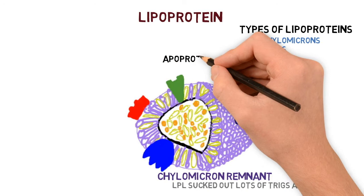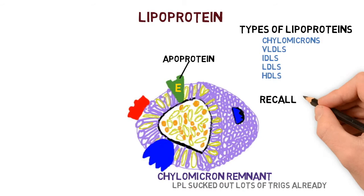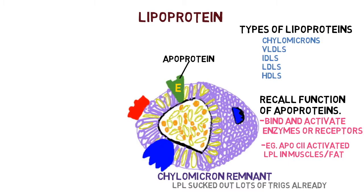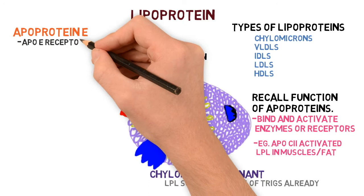If we take a closer look at this chylomicron remnant, we will see that there is an apoprotein E associated with it. Recall the function of apoproteins: the function of apoproteins is to bind and activate enzymes or receptors. For example, apoprotein C2 activates lipoprotein lipase in muscles and fat. So what does apoprotein E do?